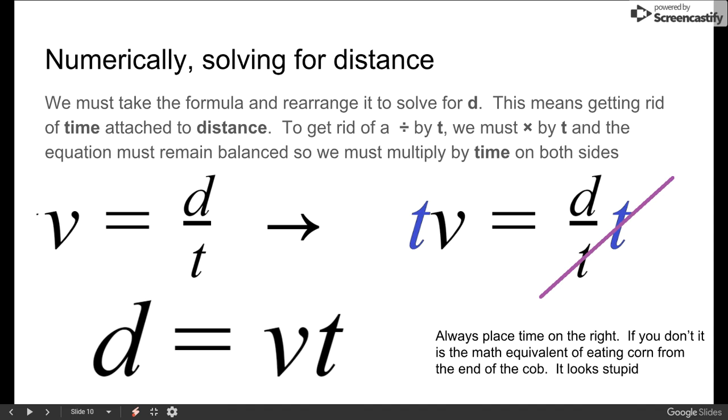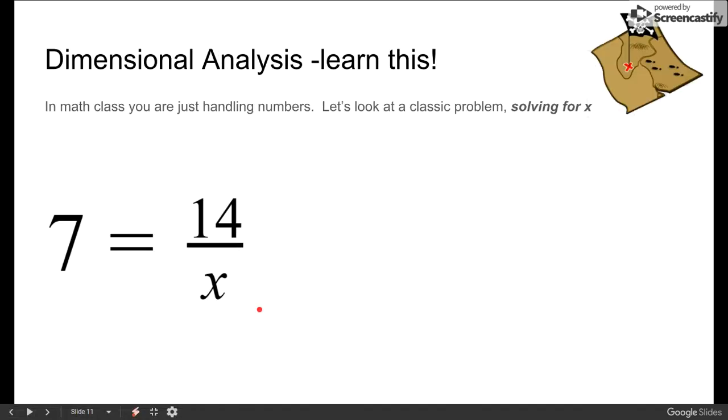Dimensional analysis comes in when we stop looking at the numbers themselves and just looking at the letters, and this allows us to see if our formula is correct. So a classic old math problem: the teacher says solve for x. You and your friends are told 7 equals 14 over x. What is x?